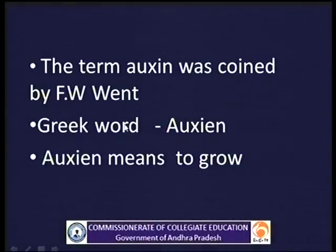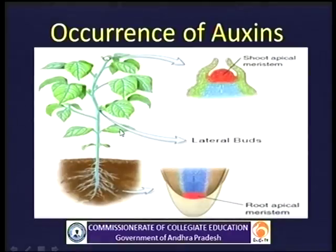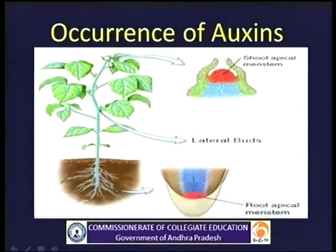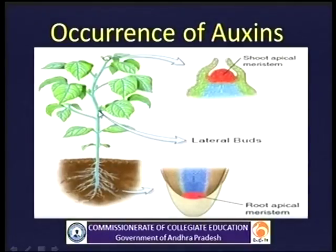The term auxin was coined by FW Went and is derived from a Greek word meaning 'to grow.' Auxins are present mostly in the shoot apex. They are produced in the shoot apex and are generally stored in the lateral buds. Auxins are transported downwards from the tip, showing basipetal transportation and polarity. Some auxins are also produced at the root apex.